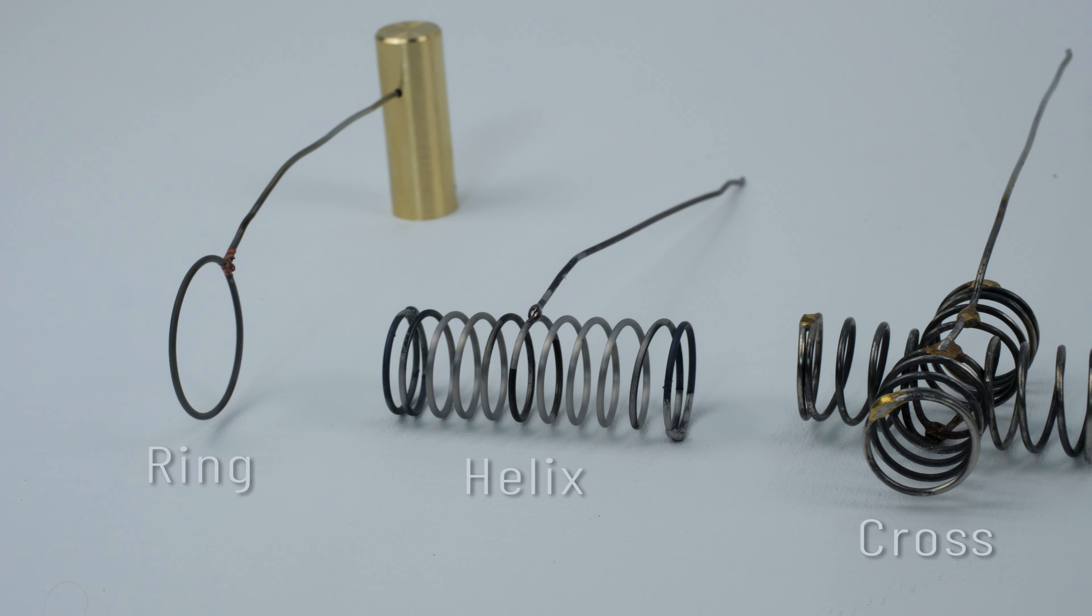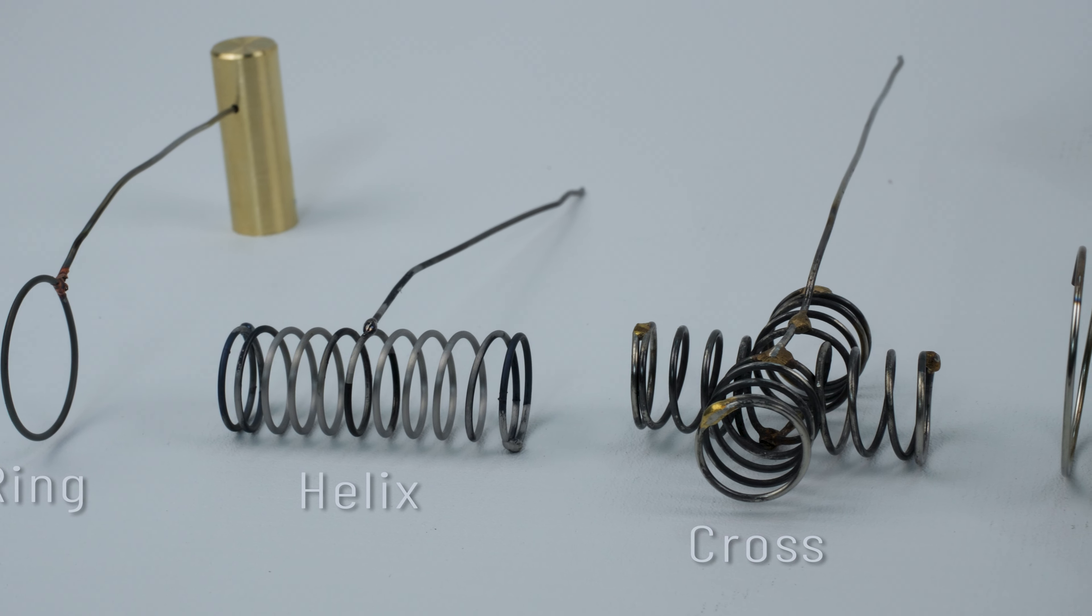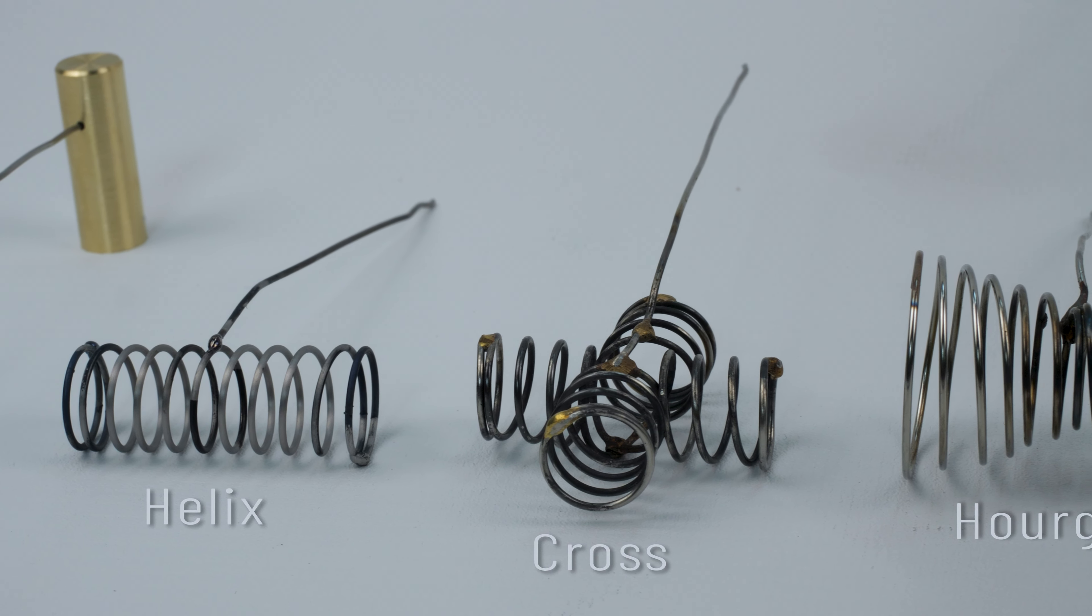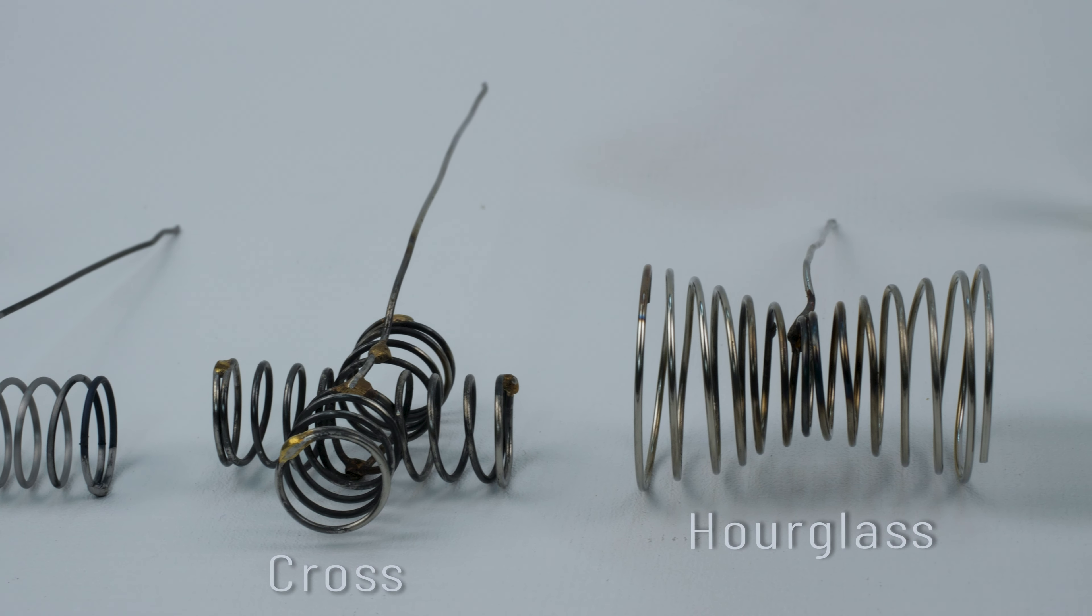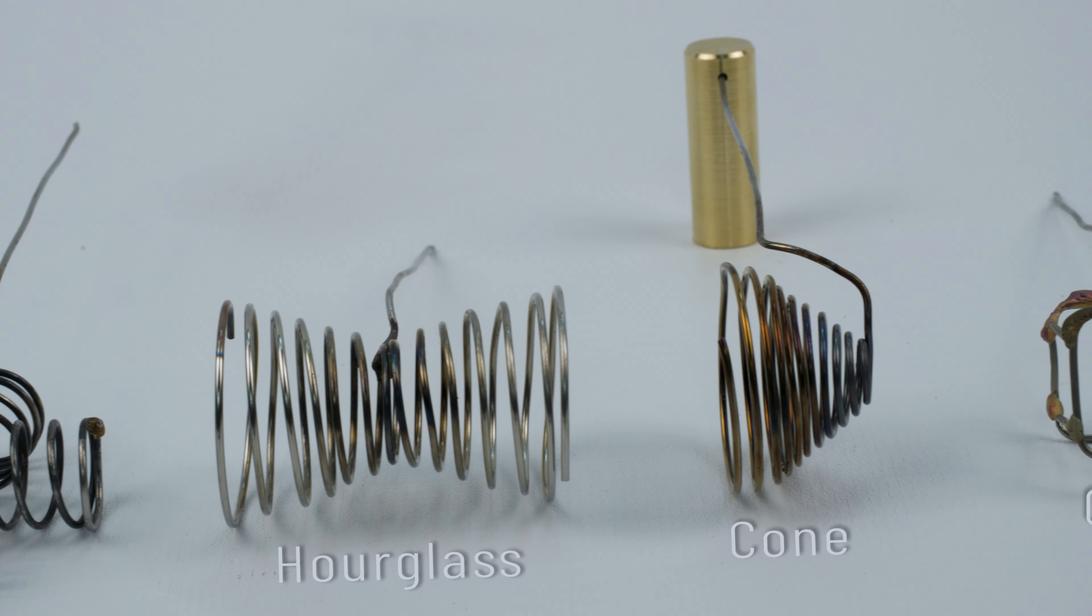I wanted to start really simple, so I just made a single ring design to see how much of an effect this would have on the plasma. Next I wound the wire in the shape of a helix. Then I made a helical cross shape. Getting a little more unique, I created an hourglass and a cone shape grid.